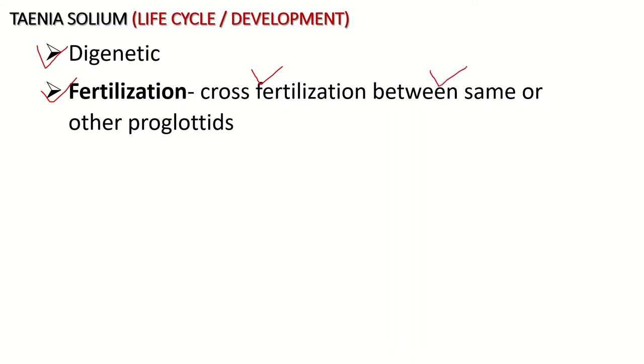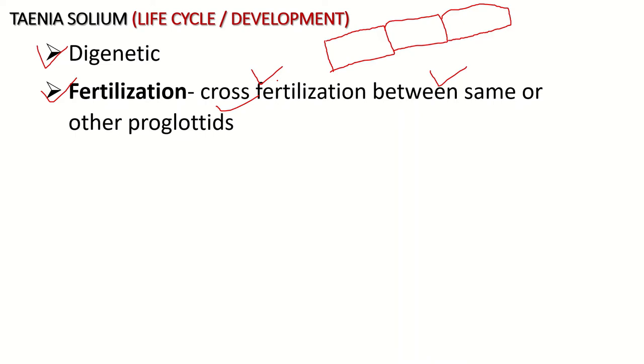Fertilization of Taenia solium takes place in the human being. Before fertilization, cross-fertilization or copulation takes place between the same or other proglottids in the human body. Copulation is the insertion of the cirrus into the vagina of the same or other proglottids to release spermatozoa. This is an internal fertilization which takes place inside the body.